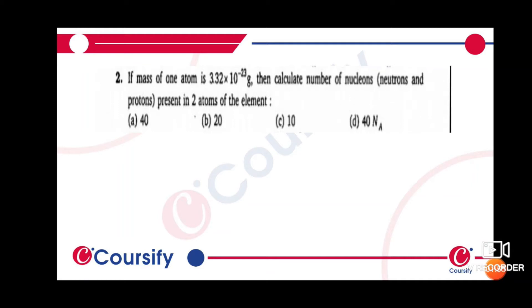Next, if the mass of one atom is 3.32 × 10⁻²³ gram, then calculate the number of neutrons present in two atoms of the element.